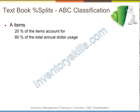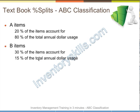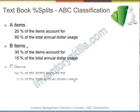The textbook percent splits for ABC Classification are that 20% of the total dollars you spend on purchased items are probably close to 20% of the items, and they are generally classified as A items. 15% of the money you spend probably spreads over 30% of your items, classically tagged as B items. And only 5% of your annual dollar usage could be up to 50% of your items, classified as C items.